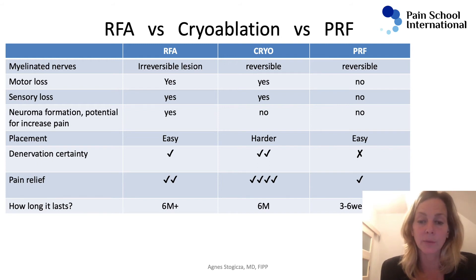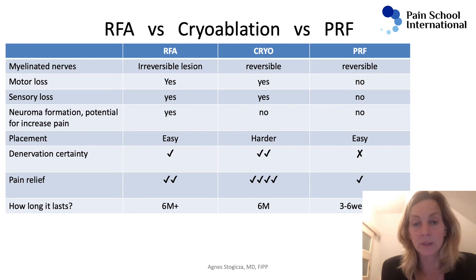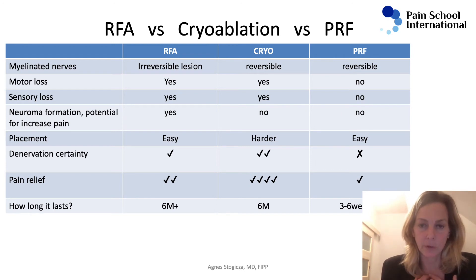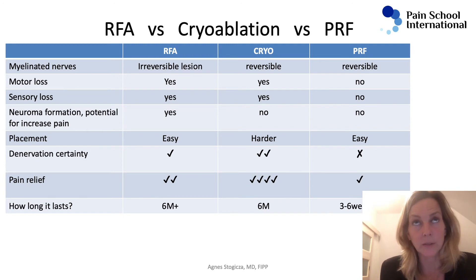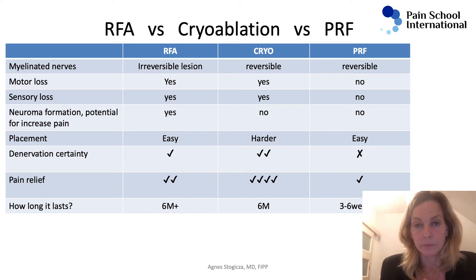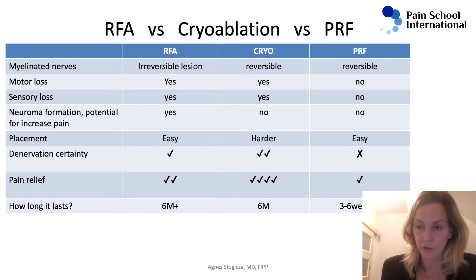How long does it last? We know radiofrequency is six to twelve months — some studies even talk about two years. For cryo I would say six to twelve months as well; in my experience it's closer to six. PRF is really short — most studies look at PRF for three months, but based on my experience and conversations with many experts who work on peripheral nerves, it doesn't work that long. It's shorter, unfortunately.